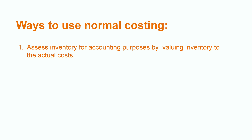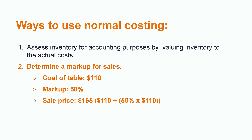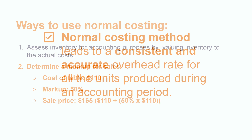Zee Furniture can use this information in a few ways to plan its budgets. Number one, it can assess the inventory for accounting purposes — valuing inventory at actual cost, which is materials and direct labor, and only one estimated rate, which is manufacturing overhead. Zee Furniture can also use this method to determine a markup for sales. If Zee Furniture makes each dining table for $110 and wants to mark up all items at a 50% rate, Zee will have to sell the dining tables for $165, which is $110 cost to produce plus $55, which is 50% of $110.